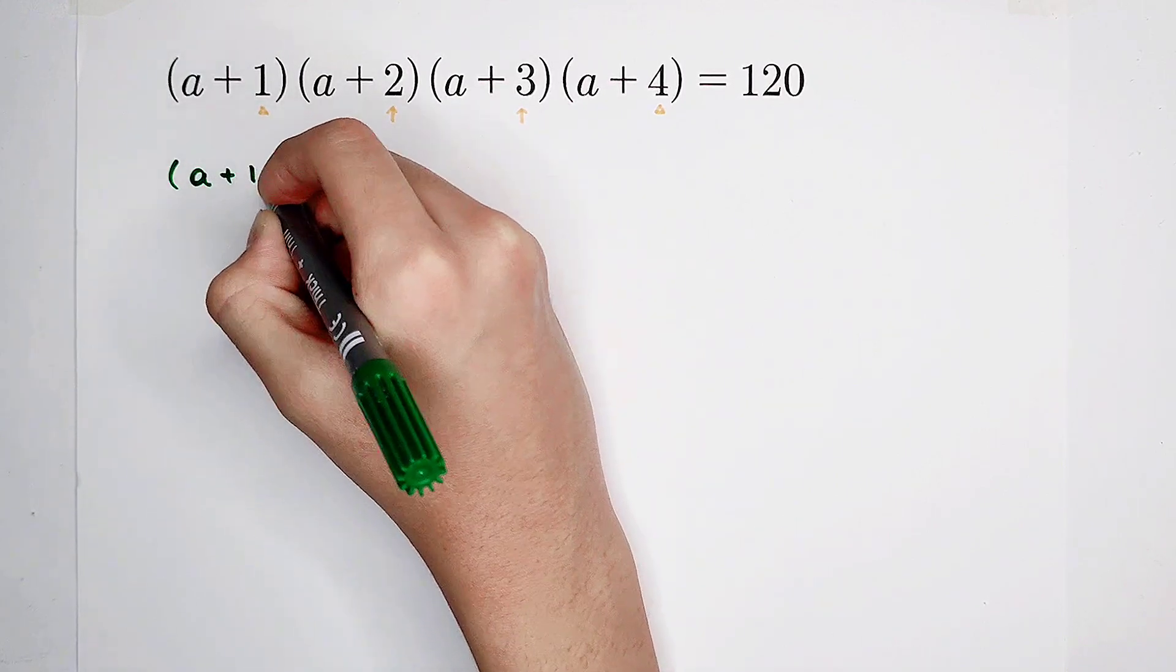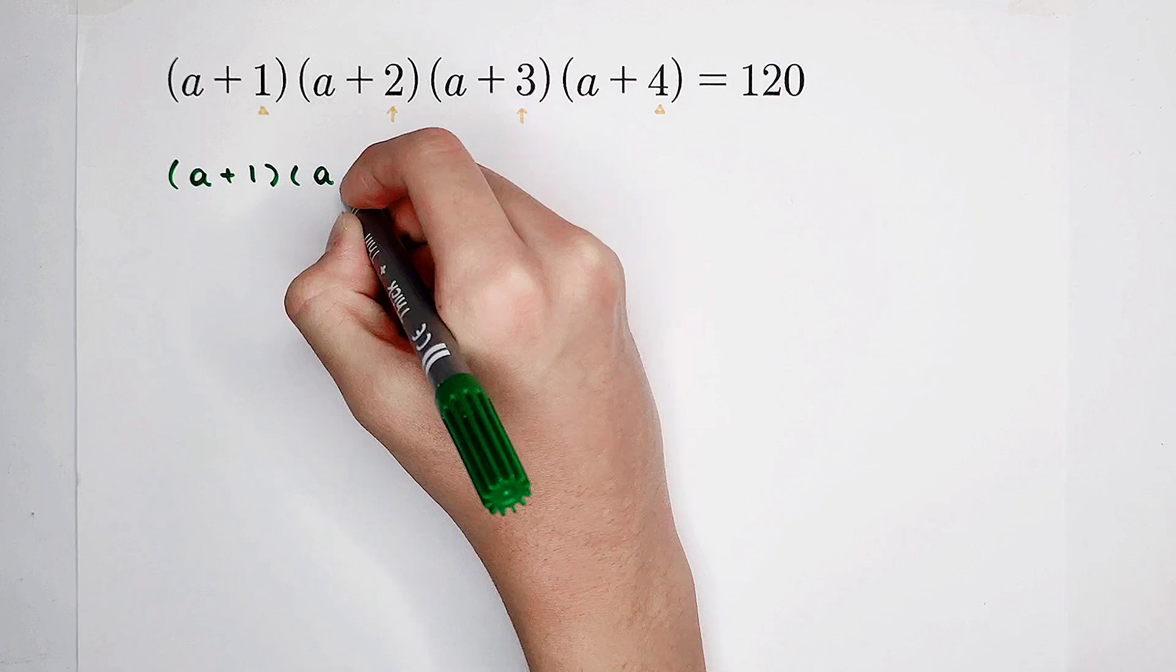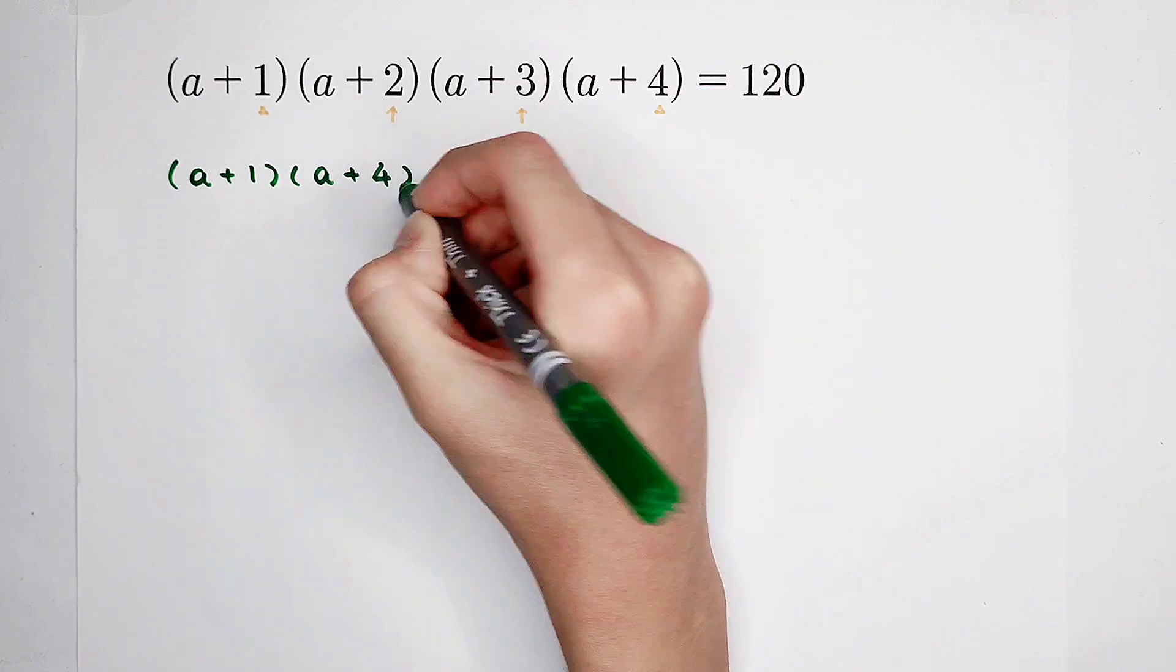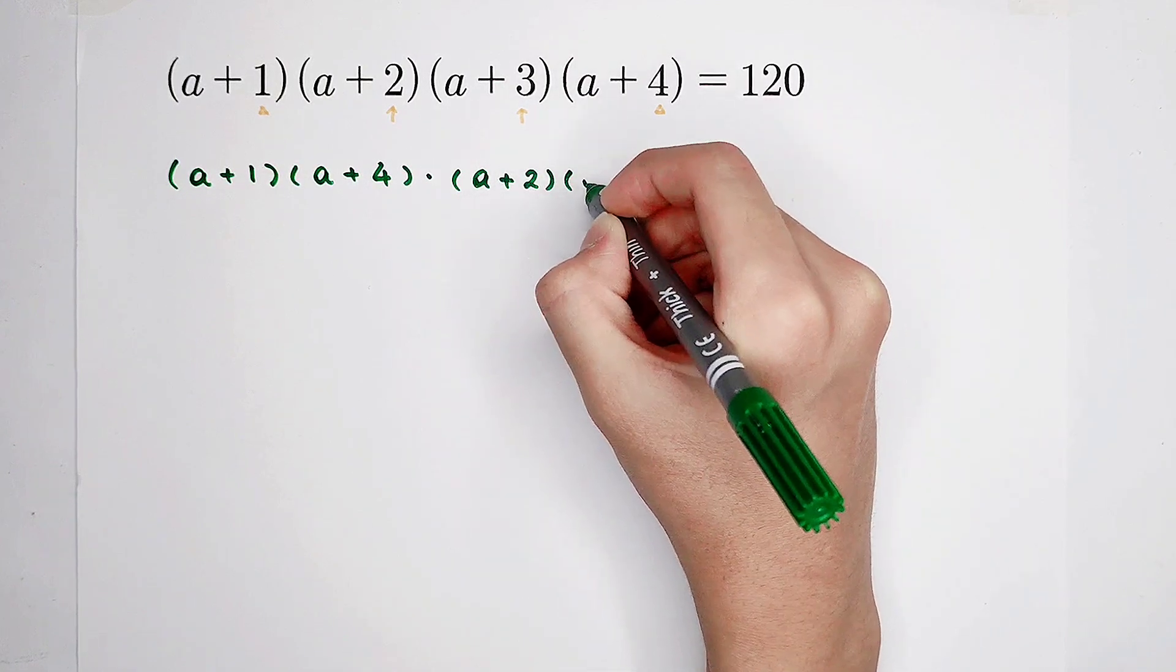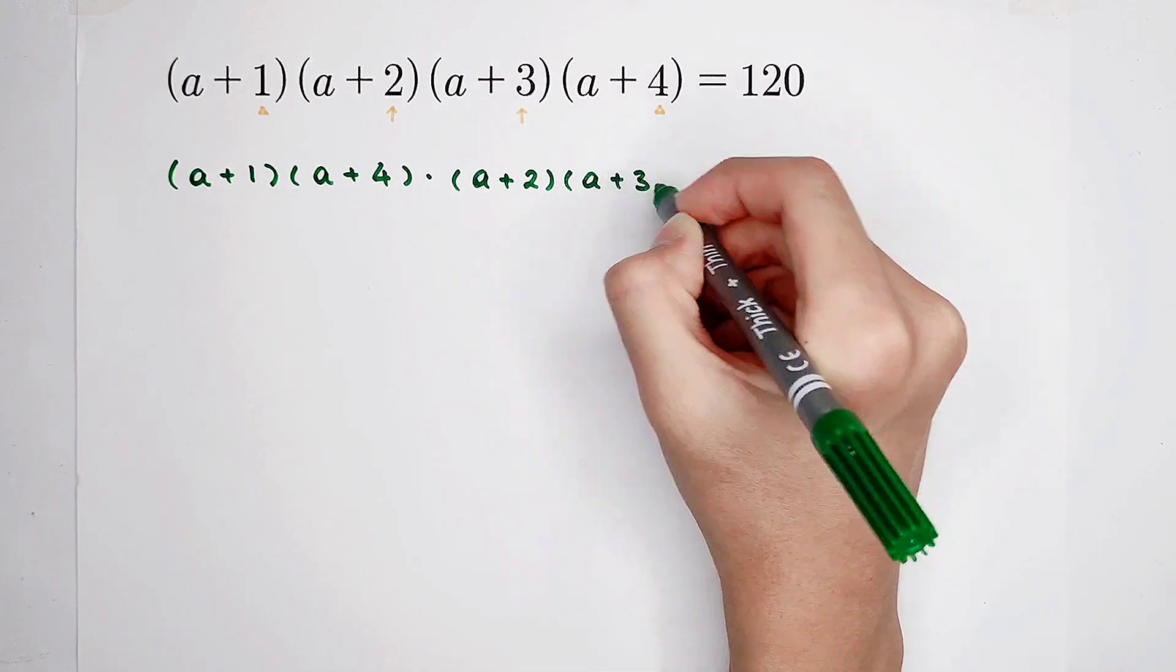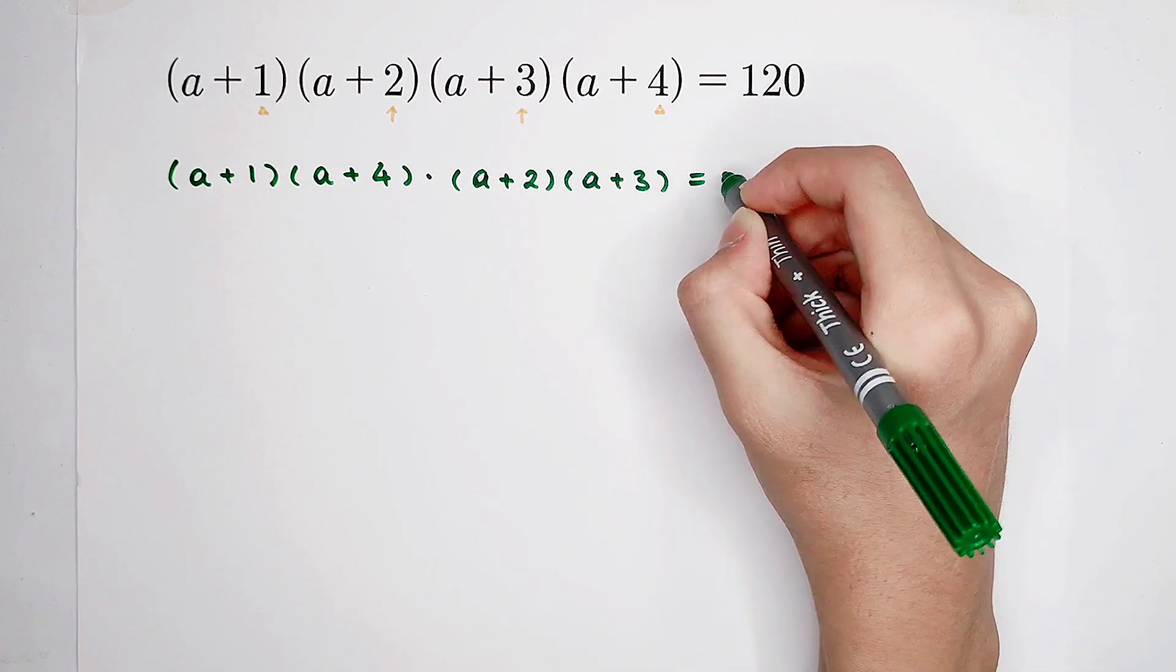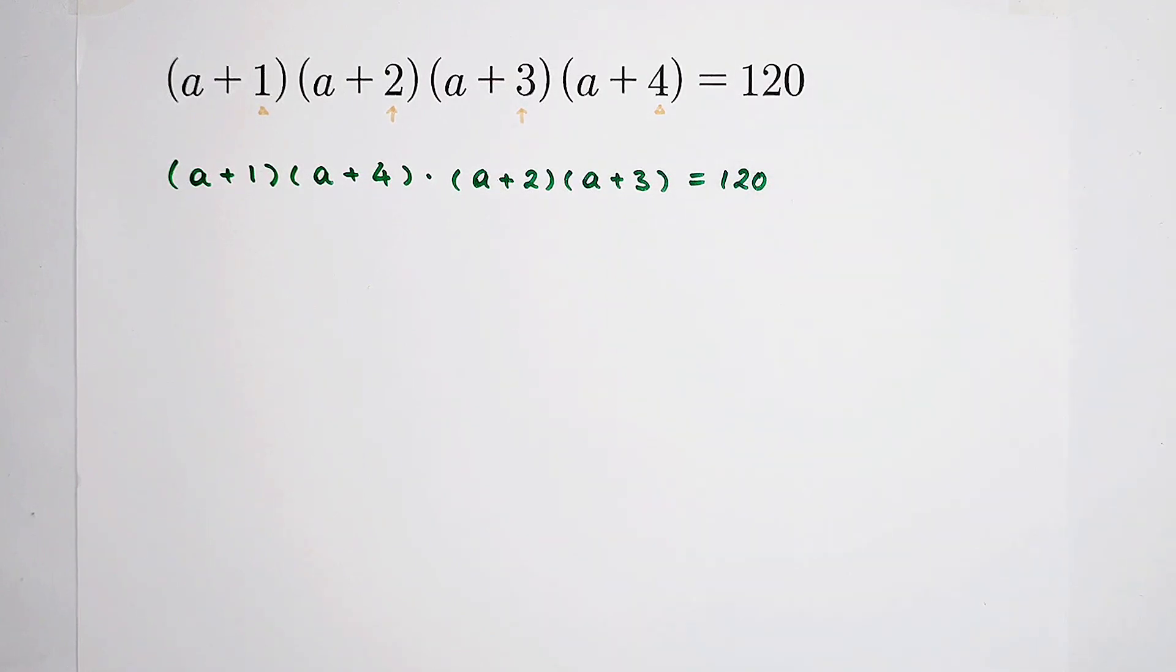a plus 1 times a plus 4, then times a plus 2 times a plus 3. The right side is still 120. So then,